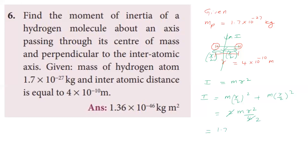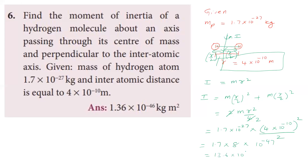Substituting values: I = M × (R/2)² × 2 = 1.7 × 10⁻²⁷ × (4 × 10⁻¹⁰)² / 2. Now 4² = 16, 16/2 = 8. (10⁻¹⁰)² = 10⁻²⁰. Combined with 10⁻²⁷ gives 10⁻⁴⁷. So I = 1.7 × 8 × 10⁻⁴⁷ = 13.6 × 10⁻⁴⁷ = 1.36 × 10⁻⁴⁶ kg·m². Answer: 1.36 × 10⁻⁴⁶ kg·m².